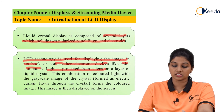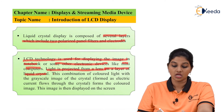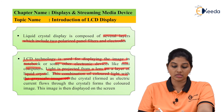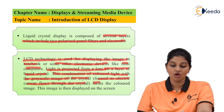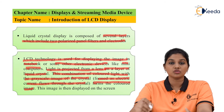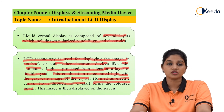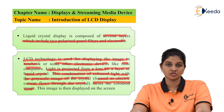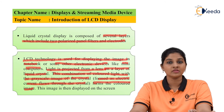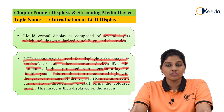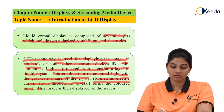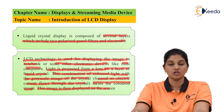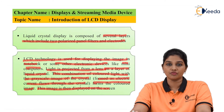The light is projected from a lens onto the layers of the liquid crystal. This combination of colored light with the grayscale image of the crystal, as an electric current flows through the crystal, forms a colored image. So the light is focused onto the liquid layers of the liquid crystal by using a lens and then converted into the form of a visible image displayed on the screen.